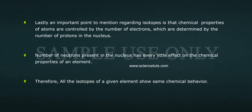Lastly, an important point to mention regarding isotopes is that chemical properties of atoms are controlled by the number of electrons, which are determined by the number of protons in the nucleus. Number of neutrons present in the nucleus has very little effect on the chemical properties of an element. Therefore, all the isotopes of a given element show same chemical behavior.